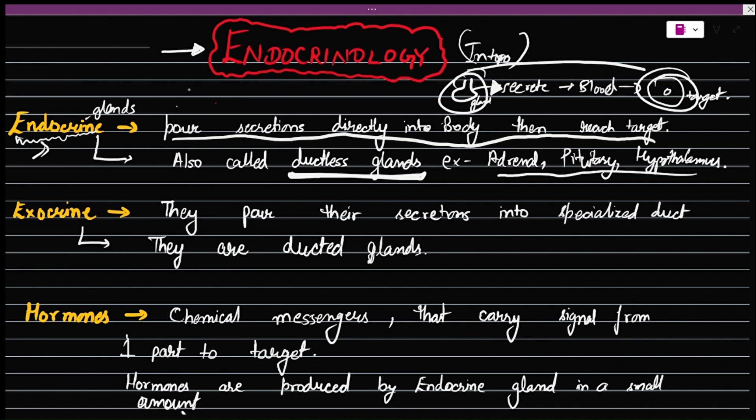Now, what about exocrine? Exocrine are those glands which pour their secretions into a specialized duct. That's why they are called ducted glands.